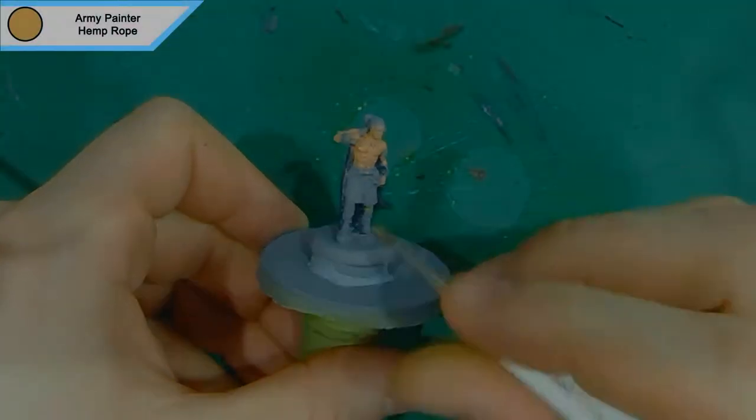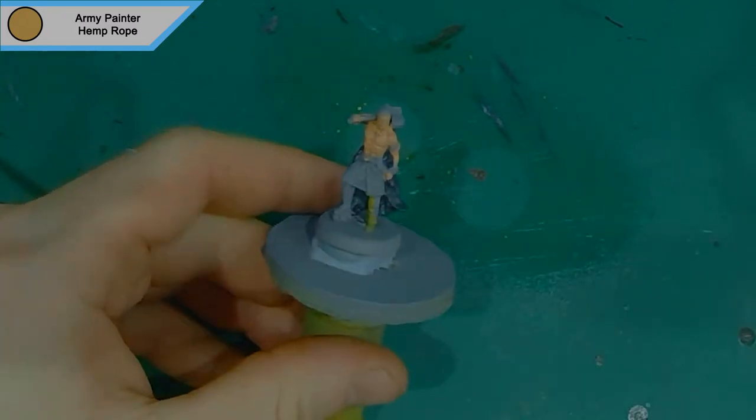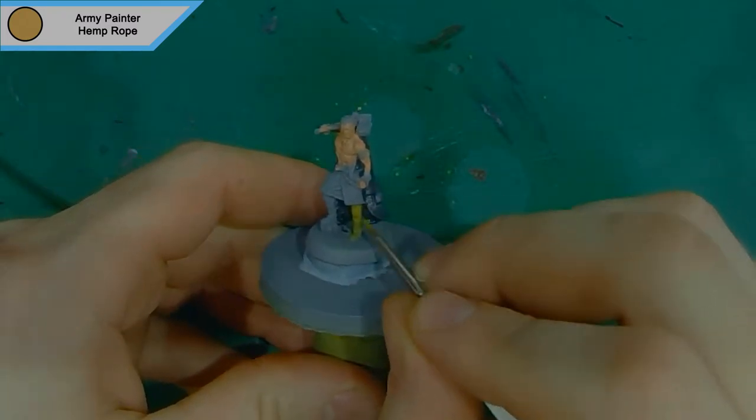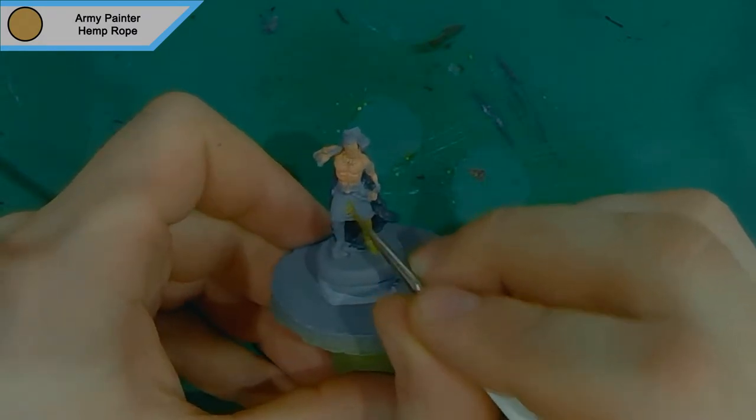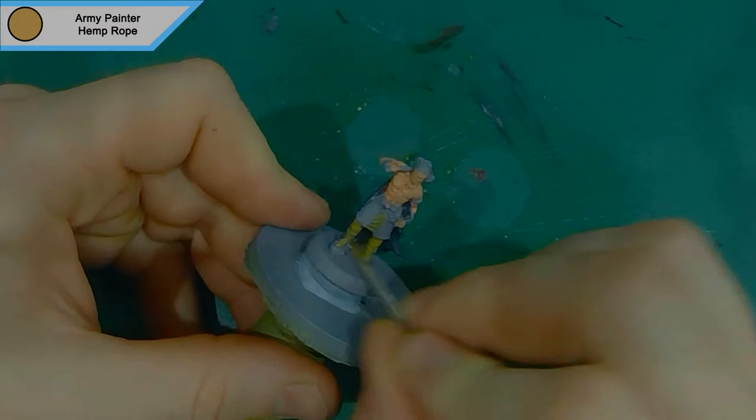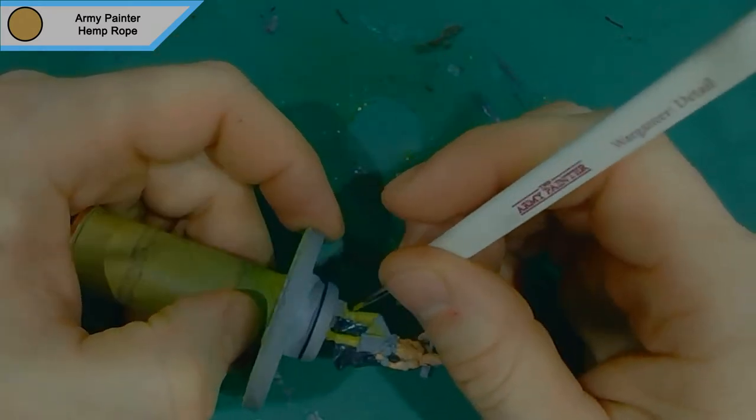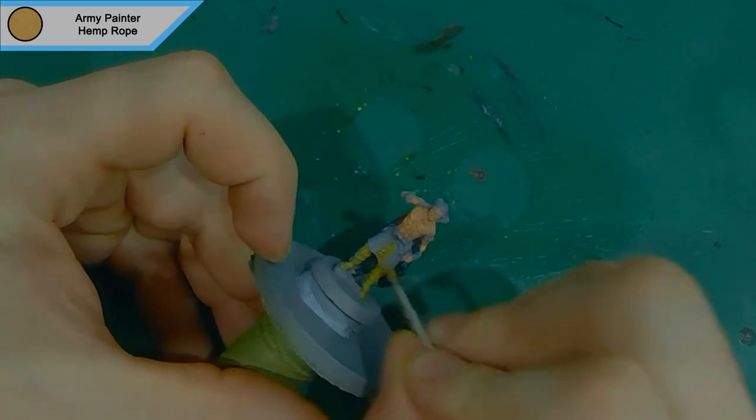That's it for necromancer's cloak. We move on to hemp rope, which is for all of the leather parts. He's got fully strapped up boots so there's no legs on show, and he's got a bit in him in the middle as well. I don't do the straps on his arms in this. I use leather brown for that. I wanted it to be a little bit separate.